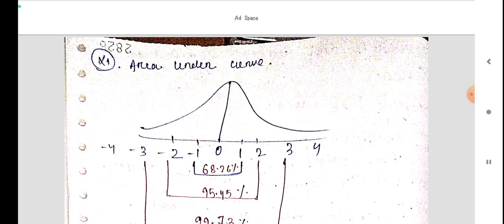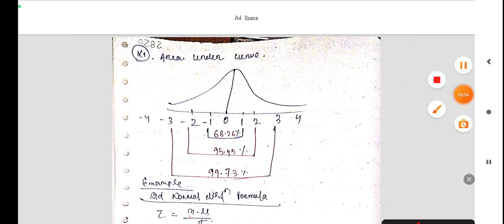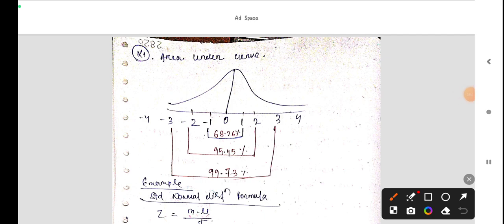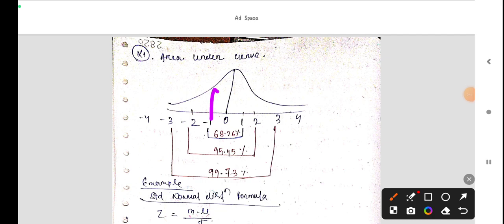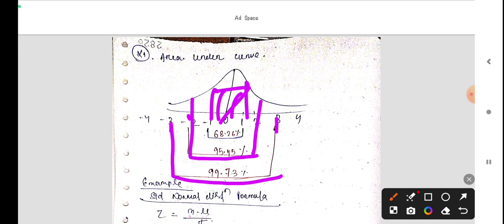Area under the curve. The value is, as we studied last time, the middle will be zero. And after this, all values remain in positive and in this negative. So here, 1, 2, 3, 4 and minus 1, minus 2, minus 3 and minus 4. The area between this is 68.26. Area between this is 95.45. And area between this is 99.73. Between minus 1 and plus 1 is 68. Minus 2 and plus 2 is 95.45. And minus 3 and plus 3 is 99.73.